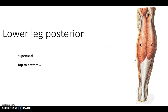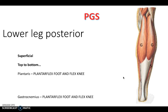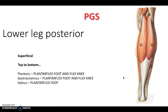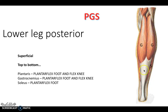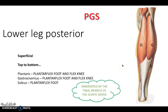Finally we have the posterior lower leg, which has superficial and deep compartments. The superficial compartment has the mnemonic PGS. Plantaris, which plantarflexes the foot and flexes the knee. Gastrocnemius, a double-bellied or double-headed muscle making up the majority of the posterior compartment, which plantarflexes the foot and flexes the knee, with its tendon running all the way down to the heel. And soleus at the side, which also plantarflexes the foot. These are innervated by the tibial branch of the sciatic nerve.